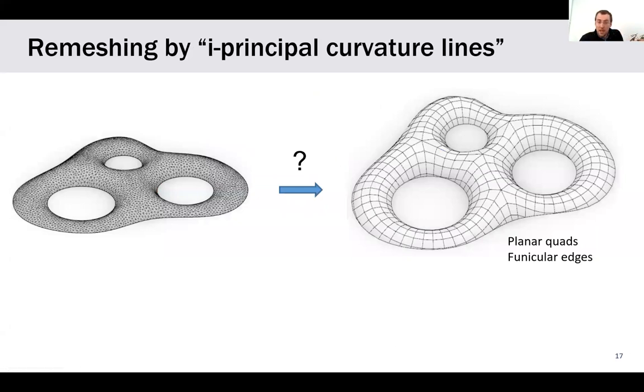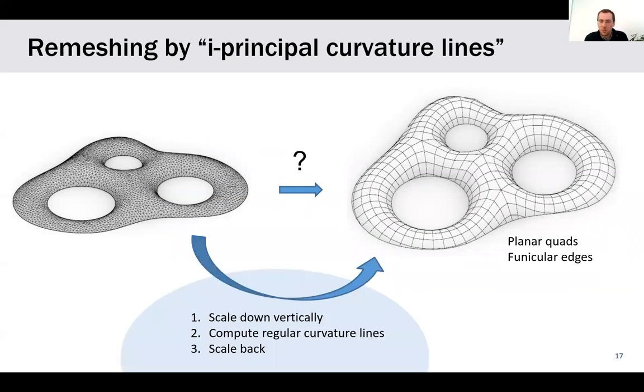Once you have this shape, you need to actually remesh them by isotropic principal curvature lines to obtain the properties you're interested in. How can you do this? Well, you could just integrate the eigenvectors of your Hessian matrix of the height field, write your own algorithm. But actually, if you're a bit lazy, there's a trick to use existing algorithms by doing a detour by Euclidean geometry. The trick is to take your i-Weingarten surface, scale it down vertically quite a bit. In this state, the slope is very small, such that the isotropic and the Euclidean principal curvatures nearly coincide with very good precision. So you can compute curvature line networks in this configuration using your favorite algorithm. And then you can scale it back by vertical scaling. The i-principal curvature lines do not change direction. They stay exactly the same.